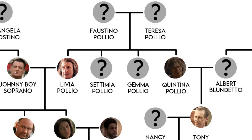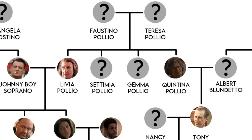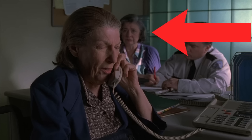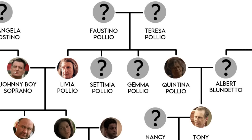Gemma is alive and lives in Tucson, Arizona. She was the aunt that Tony was sending Livia to live with in the episode Funhouse. The final aunt is Quintina, also known as Quinn. We actually see her in Funhouse as she's arrested alongside Livia for the fake airline tickets. She would later marry Albert Blundetto — this is the Tony Uncle Al that Tony references in the episode Rat Pack.